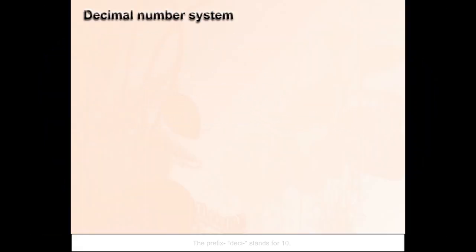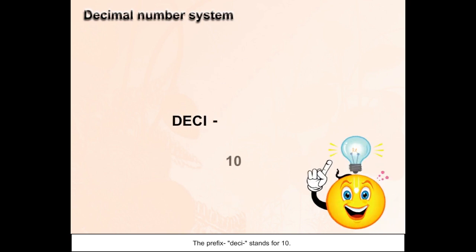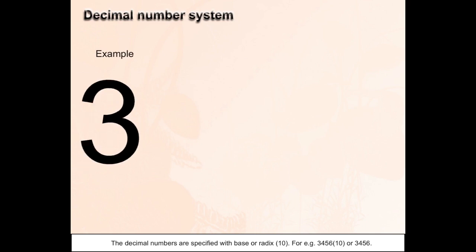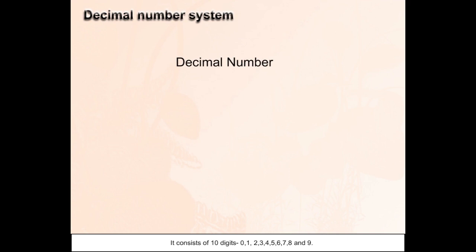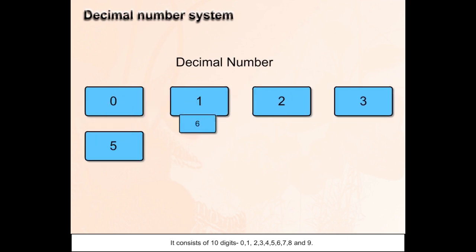The decimal number system. The prefix 'deci' stands for 10. Decimal numbers are specified with base or radix 10. For example, 3456 base 10, or 3456. It consists of 10 digits: 0, 1, 2...